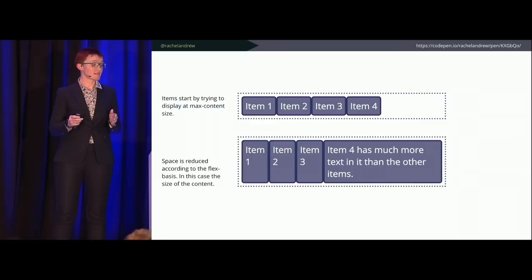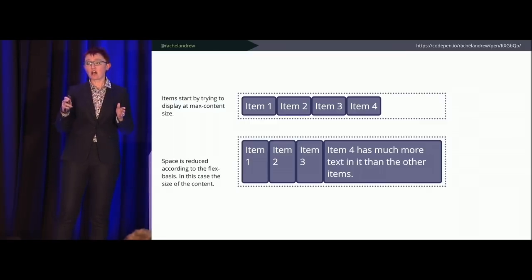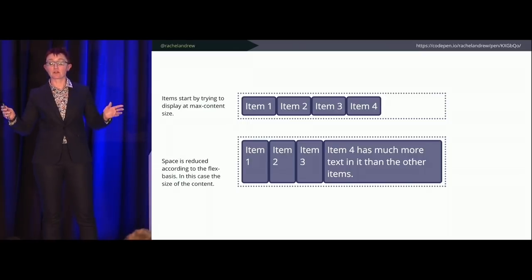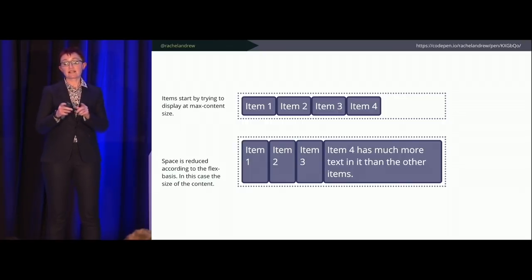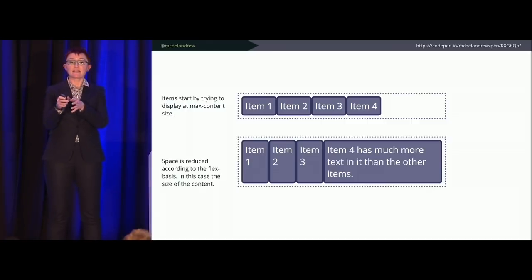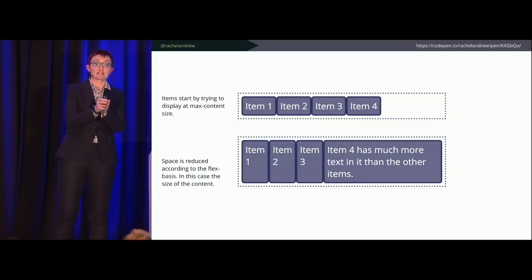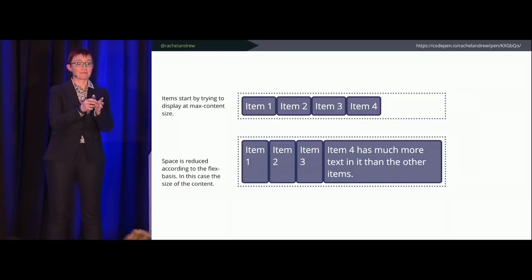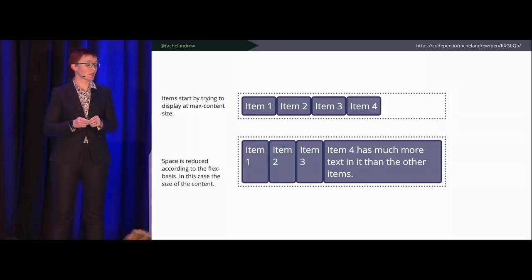Flexbox removes less space from the larger item because the default flex-basis is auto, which looks at content size. The bigger item gets less space removed, and smaller items will never shrink smaller than min-content size so they won't completely disappear. Once they've gone to min-content, everything else gets taken out of the larger box.